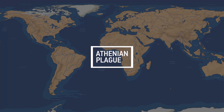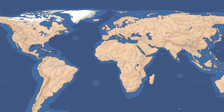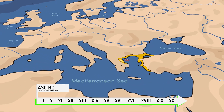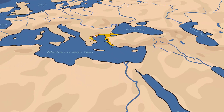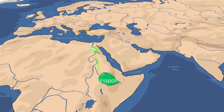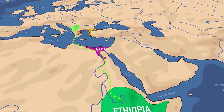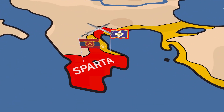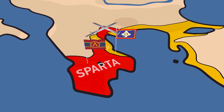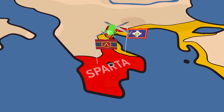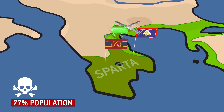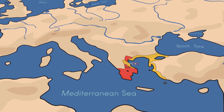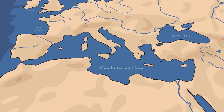The first historically documented epidemic was the outbreak of the Athenian Plague in 430 BC — modern scientists assume it was typhoid fever. According to the Greek historian Thucydides, it came from Ethiopia in transit through Egypt to the Greek cities. At that time, Sparta and its allies waged war against Athens. Athens was besieged by the Spartans, and the influx of refugees became a catalyst for the outbreak. Approximately 27% of the population of Athens and commander-in-chief Pericles died, which greatly contributed to the victory of the Spartan alliance.